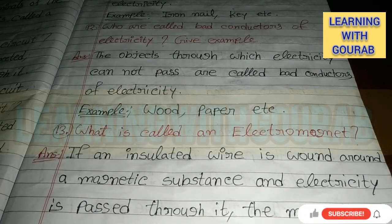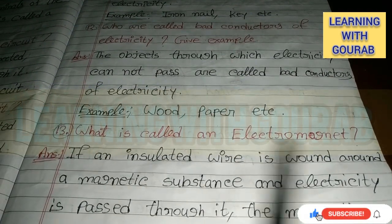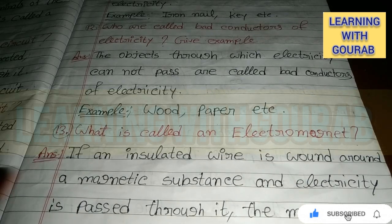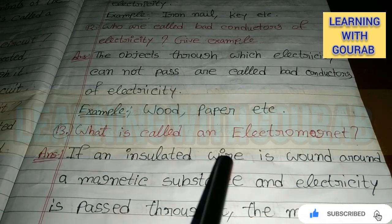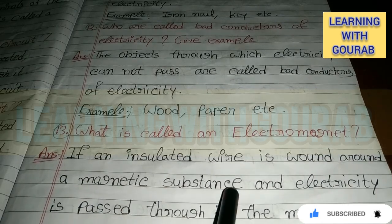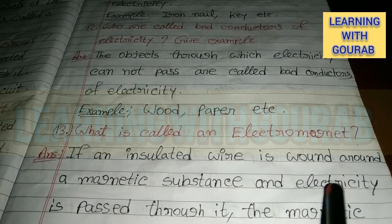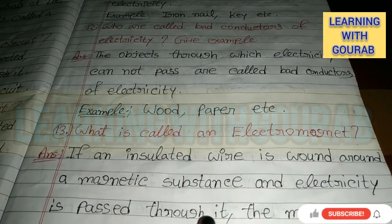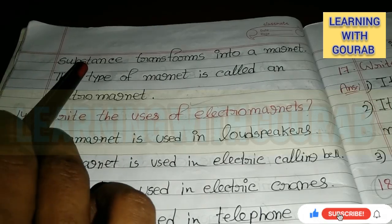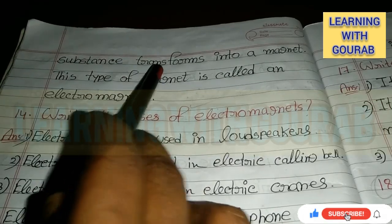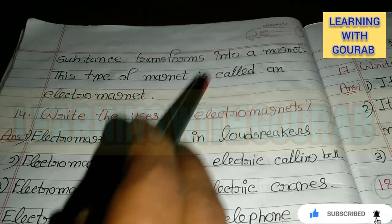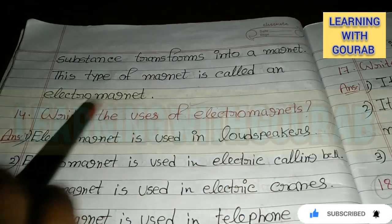Next question: What is called an electromagnet? Answer: If an insulated wire is wound around a magnetic substance and electricity is passed through it, the magnetic substance transforms into a magnet. This type of magnet is called an electromagnet.